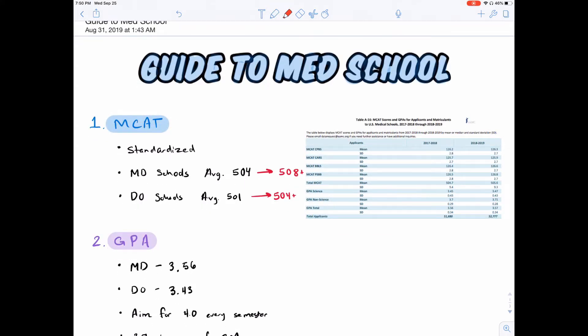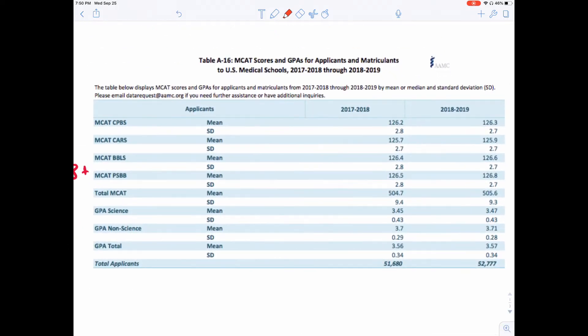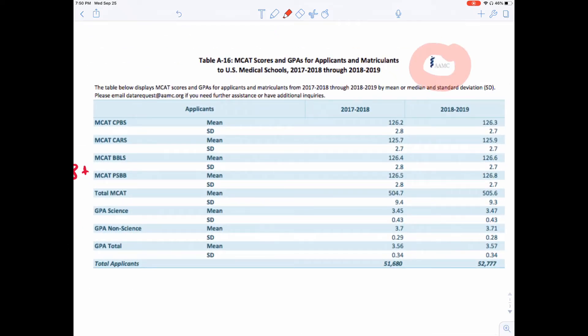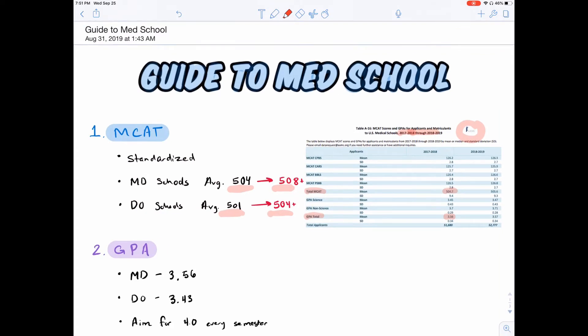According to the AAMC, the average MCAT for an applicant is 504 for MD schools and 501 for DO schools. But of course, the average for matriculants is much higher. In other words, students who got accepted have an average of 508 for MD schools and 504 and higher for DO schools. So you can see right over here in this table that I took directly from AAMC, the average MCAT was 504 for the 2017-2018 application cycle for students who applied, and the average GPA was around 3.56. Again, for those who actually got accepted, those numbers are slightly higher.